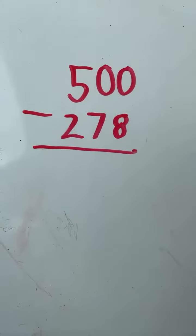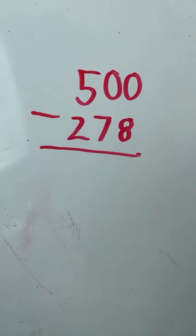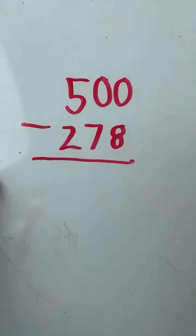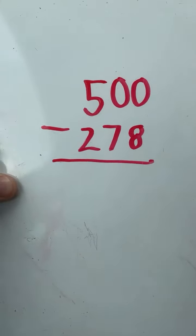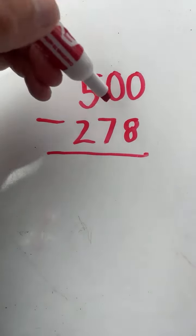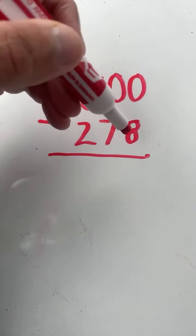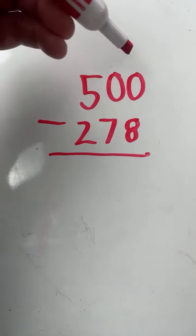Next example problem we have 500 minus 278. So again, first thing we do is we check and see if regrouping is needed. Five is bigger than two, zero is not bigger than seven, zero is not bigger than eight. You cannot start out with zero and take away seven.